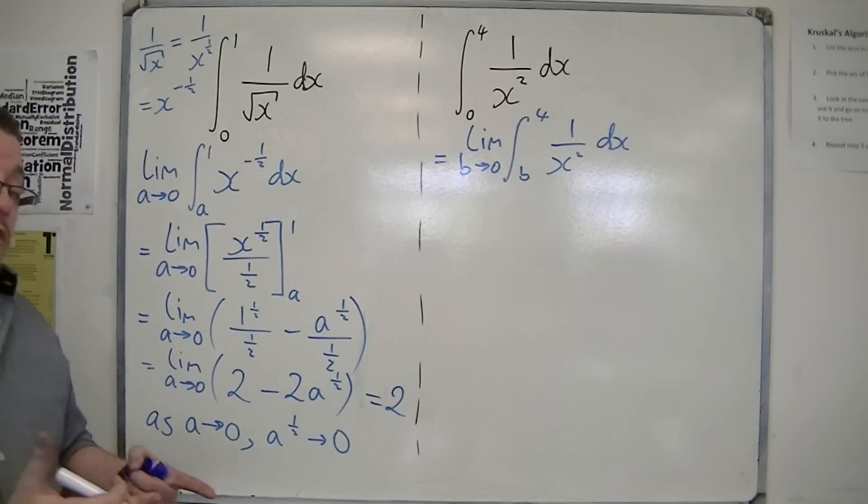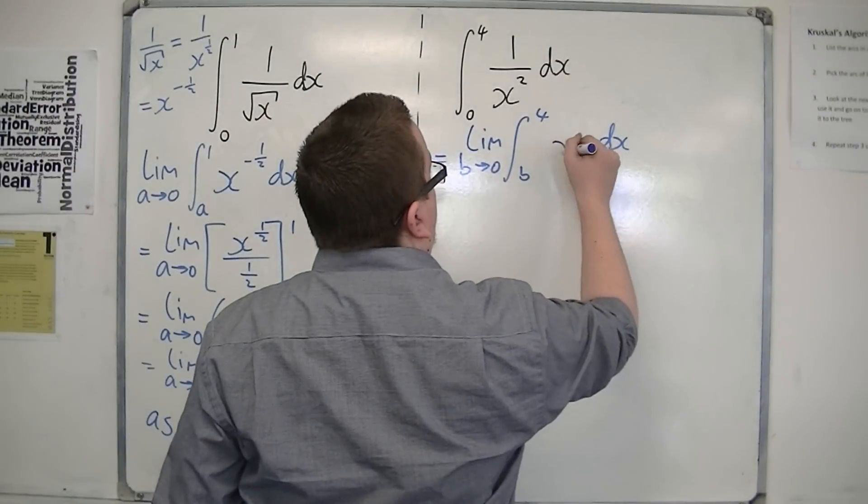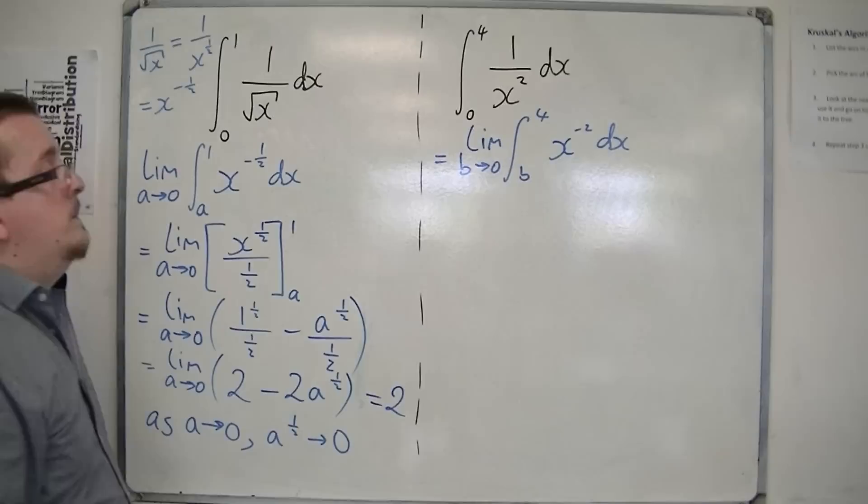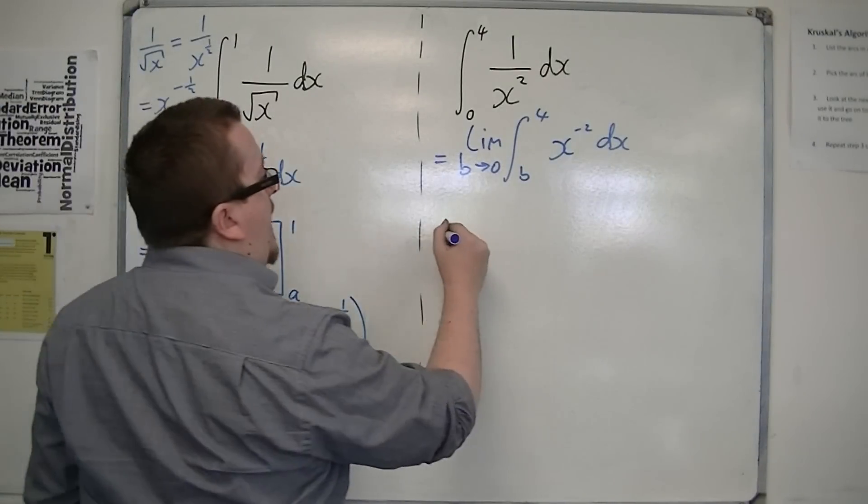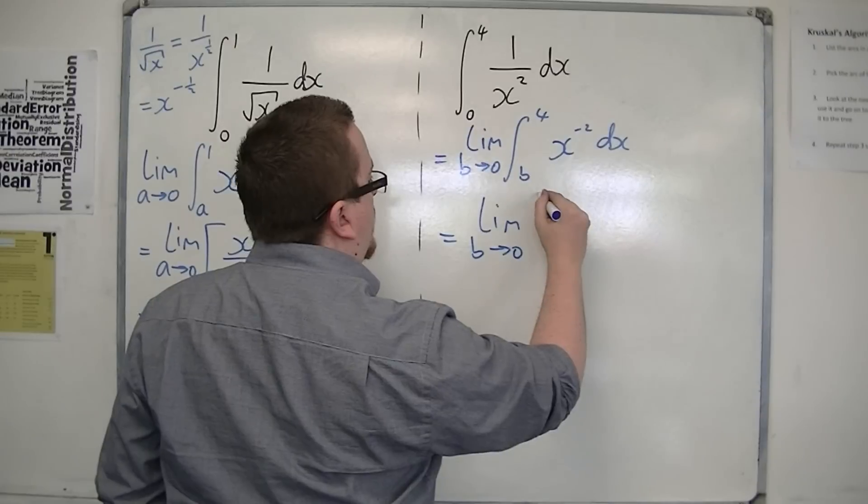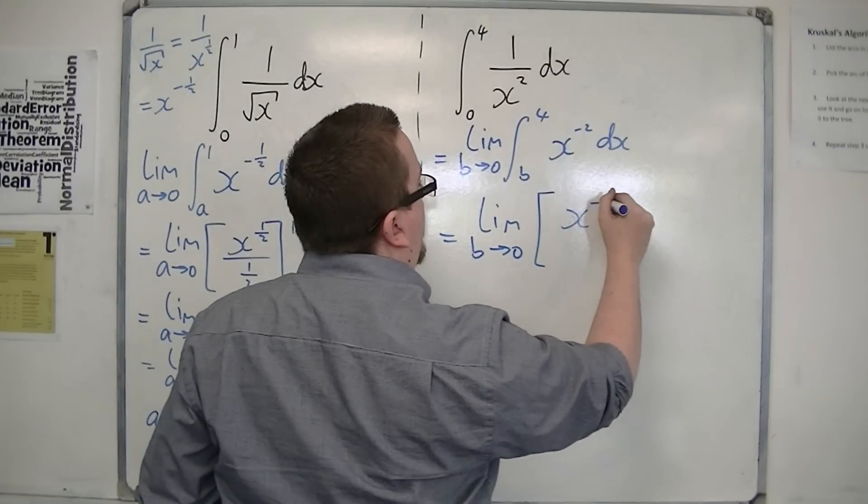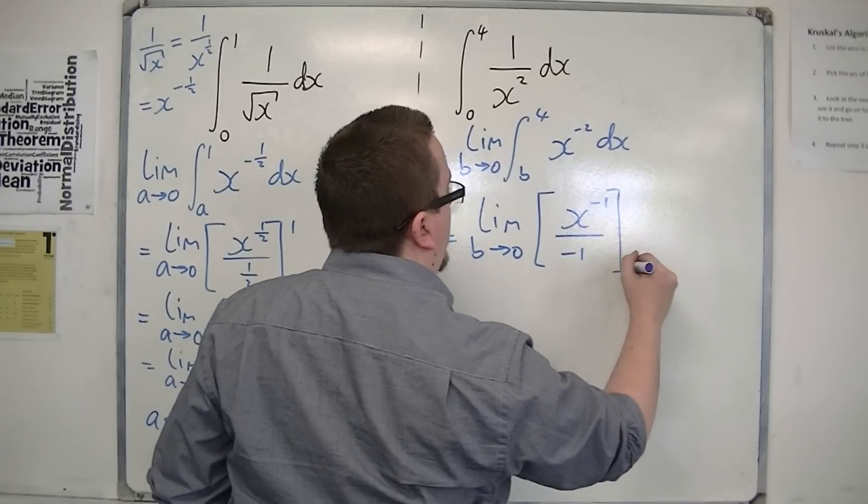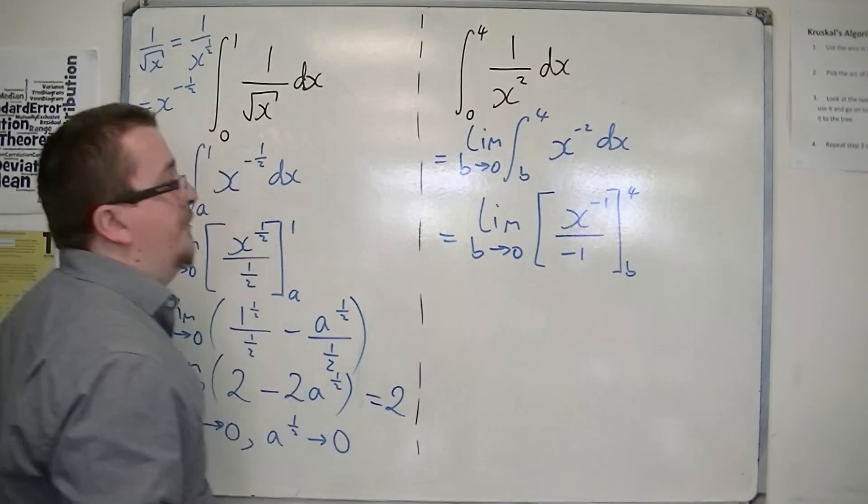Now 1 over x squared is x to the minus 2. So if I add 1 to the power, so x to the minus 1, divide by the new power, evaluate it between b and 4